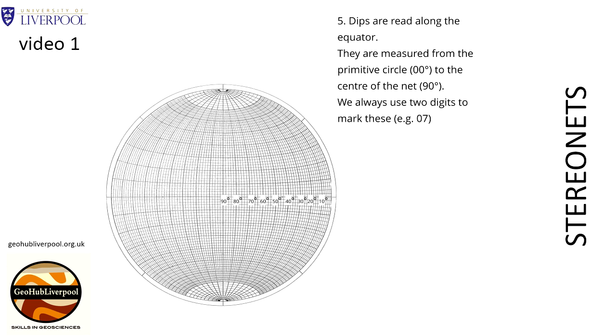By working through the series of video clips, you will see, firstly, that the planes that you plot on a StereoNet will show as lines. And secondly, that the lines that you plot on a StereoNet will show as points on your StereoGram.